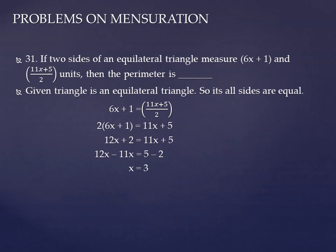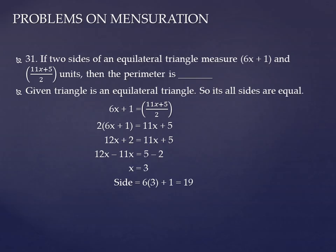Since all three sides are equal, substitute x equal to 3 in the first expression 6x plus 1: that gives 6 times 3 plus 1, which is 19. Substituting in the second expression (11x plus 5) by 2: 11 times 3 is 33, plus 5 is 38, divided by 2 is also 19. So all three sides are equal to 19. The perimeter is 19 plus 19 plus 19, which is 57 units.